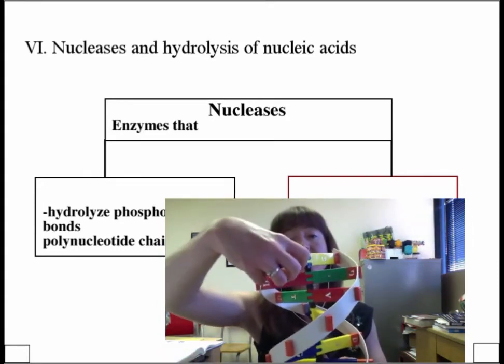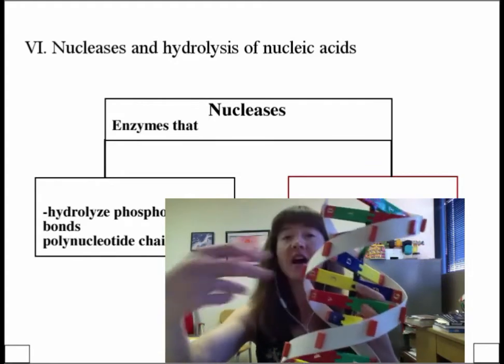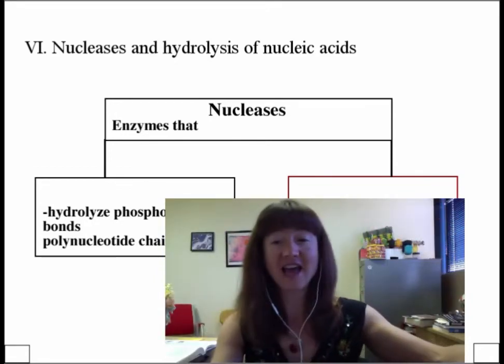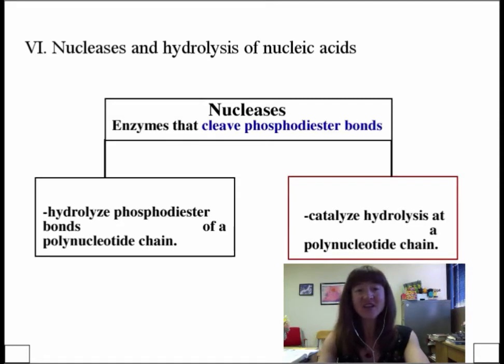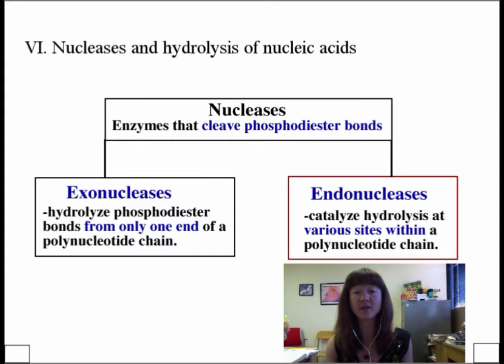So we have two different names for these two different types of nucleases. These are the exonucleases that chew this way, and the endonucleases that are more like scissors. So our Pac-Mans versus our scissor enzymes. Scissor enzymes kind of cutting in the middle, endonucleases, and these are exonucleases. Nucleases, of course, as a whole, cleave phosphodiester bonds. The two types that we talked about, there are either exonucleases that hydrolyze from the ends, and then there are the endonucleases that are more like the scissors that can cut in the middle. So they catalyze hydrolysis at various sites within a polynucleotide chain.